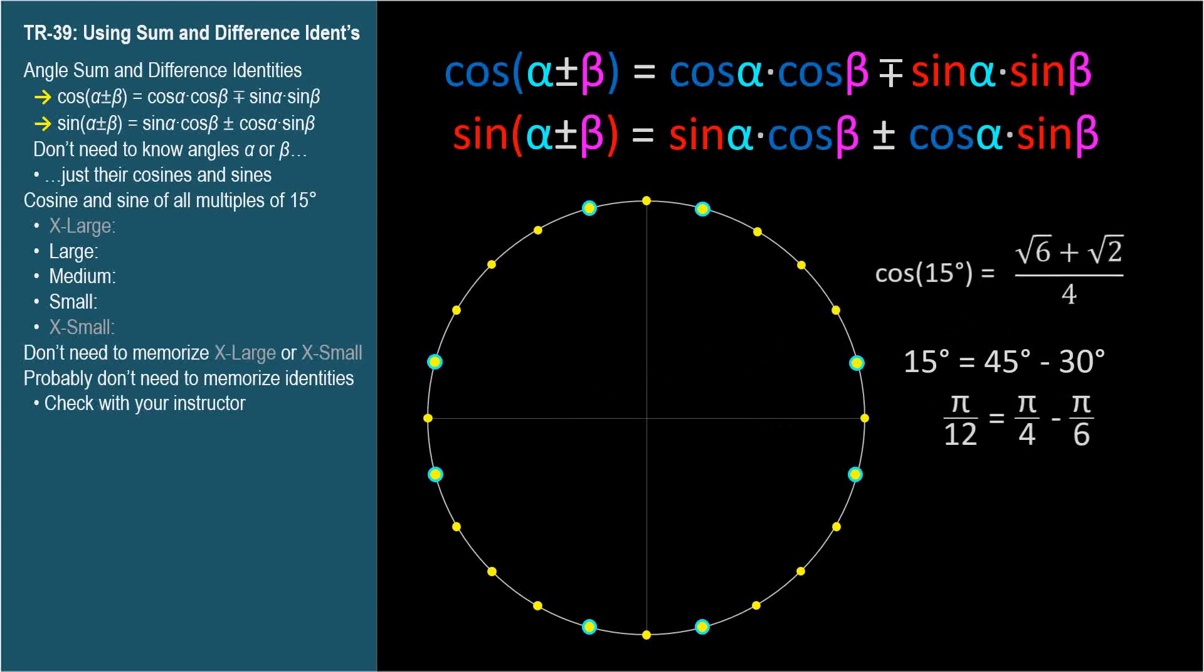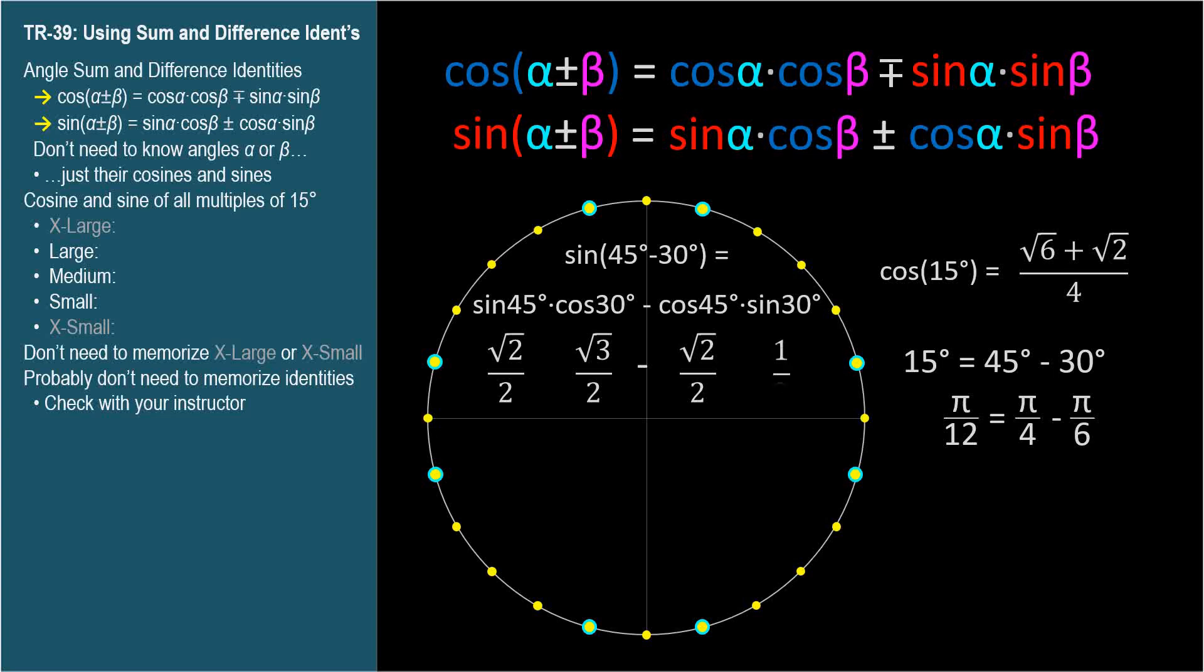Here's the identity for sine. We have sine 45 degrees, cosine 30 degrees, cosine 45 degrees, and sine 30 degrees. Multiply across as before and simplify. Almost the same as cosine except √6 - √2 all over 4.